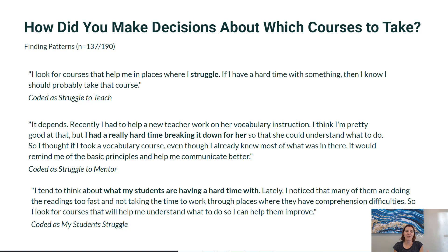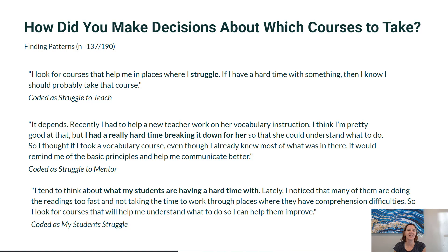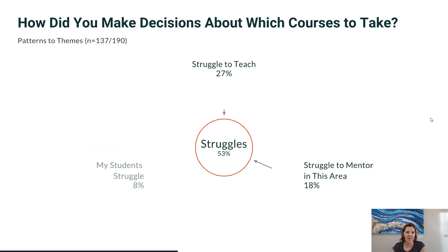The larger theme here is the concept of struggle. 53 percent of survey respondents out of 137 people communicated a struggle in some way: 27 percent said they were struggling to teach something, 18 percent said they were struggling to mentor, and 8 percent said their students were struggling — and that's how they made decisions about which courses to take.